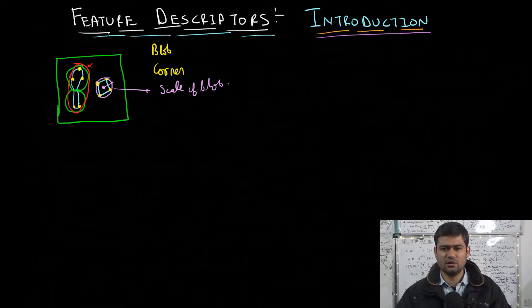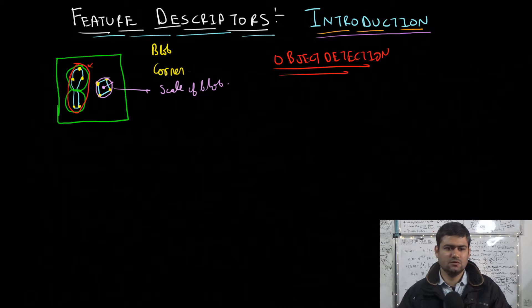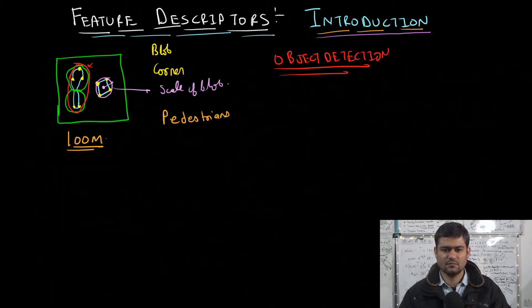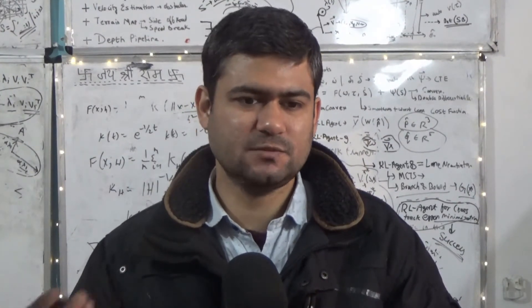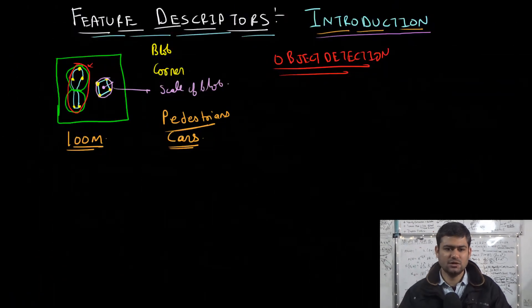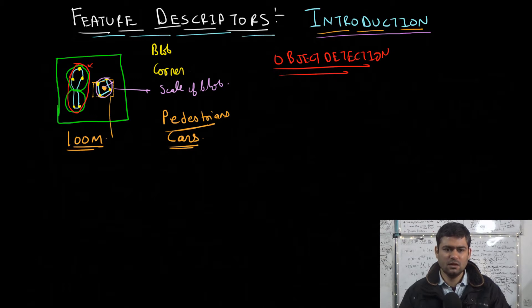Now let us assume we are working on object detection. As a hypothetical example, suppose we have 100 million images and our goal is to differentiate between pedestrians and cars. In each of those images we detect the feature points or feature regions and we describe those regions. We select a small patch around the center of the feature point and compute some function of those regions.